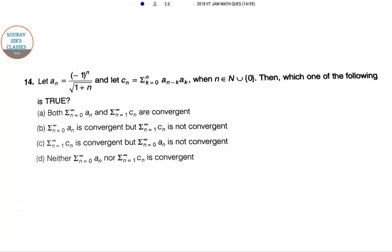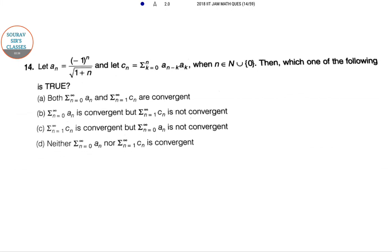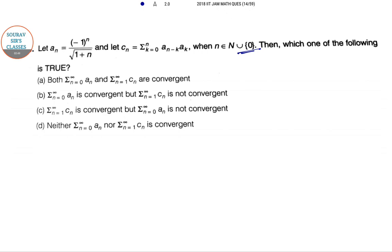Let a_n equal to minus 1 whole to the power n divided by root over 1 plus n and let c_n equal to summation of k equal to 0 to n, a of n minus k into a_k where n is a natural number and also including 0. So which of the following is true?